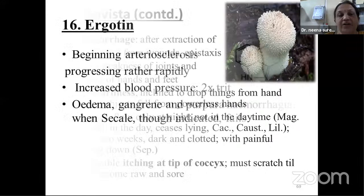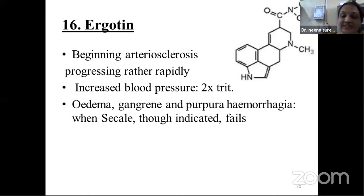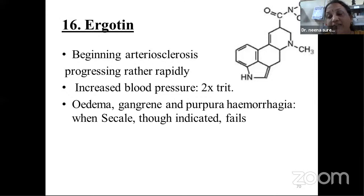Agaricus muscaris can be asked for short note at UG level, as can Bovista. The rest mainly serve to increase knowledge for PG students and clinicians. Sixteenth drug: ergotin, the active principle of this fungus. Beginning arteriosclerosis progressing rather rapidly, increased blood pressure. The 2x trituration is found to be useful. Indicated for edema, gangrene, purpura hemorrhagica. When Secale cornutum fails, you can think of ergotin to cover the simillimum.